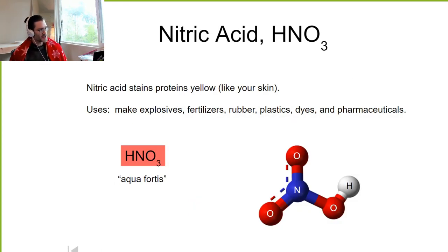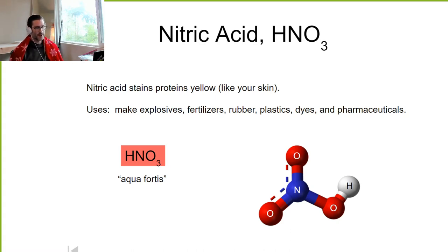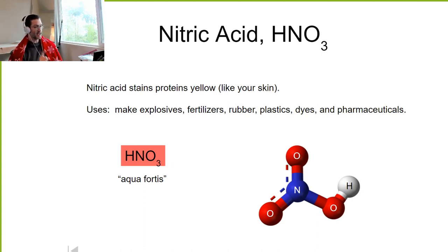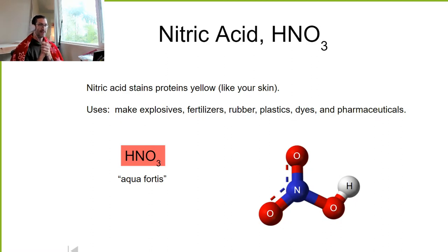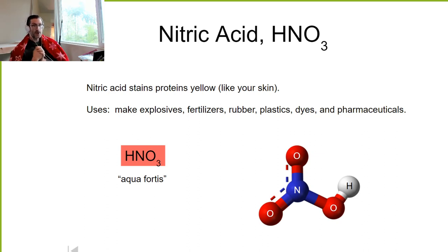On to nitric acid, which stains proteins yellow — if you get it on your skin, it'll turn your skin yellow. It's used to make explosives, fertilizers, rubber, plastic dyes, and pharmaceuticals. It's also called aqua fortis — 'very strong water.' You can mix concentrated nitric acid with concentrated sulfuric acid to form aqua regia, the royal water, which is one of the only things that will dissolve gold.